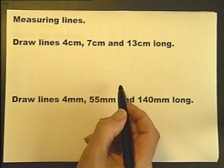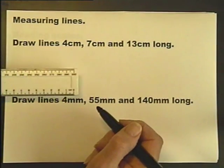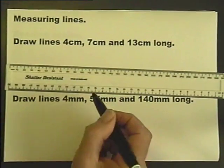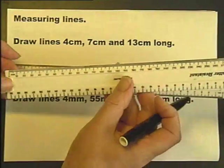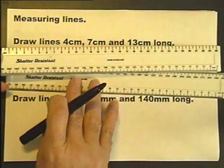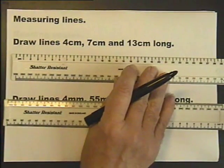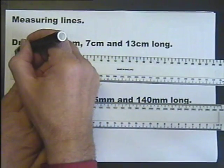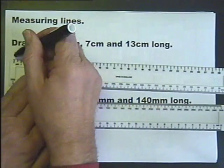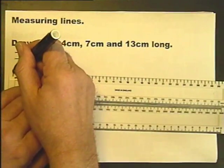So let's just remind ourselves about drawing lines. Let's draw lines of 4cm, 7cm and 13cm. Now this ruler has just got millimeters along it, whereas this ruler has got millimeters on that side and centimeters on that side. Of course you can measure the centimeters with this one, but let's make life easier and use this one. 4cm is that, 7cm is that, and 13cm is that.